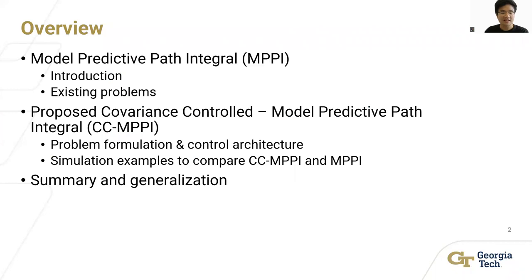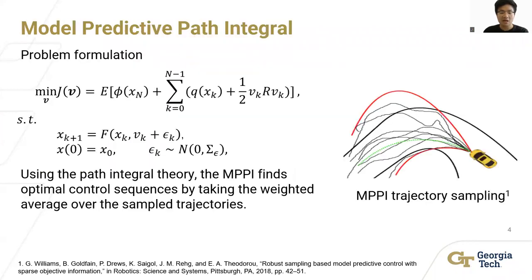Let's take a look at the MPPI controller first. This controller solves the following problem. The MPPI injects some Gaussian noise, epsilon, and samples a significant number of simulated trajectories. Using the Path Integral Theory, the MPPI finds optimal control sequences by taking the weighted average over the sample trajectories. In the figure on the right, the optimal green trajectory is generated based on the black sample trajectories.